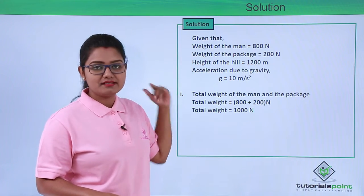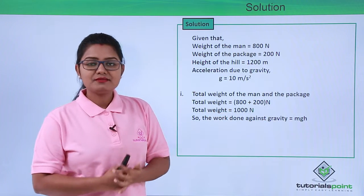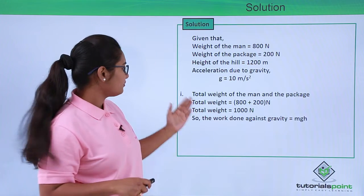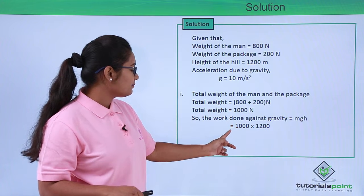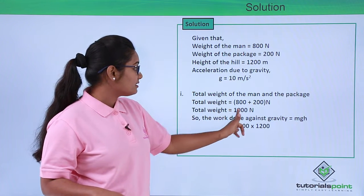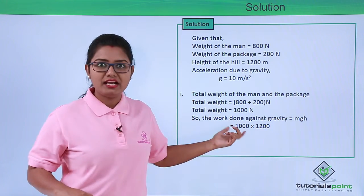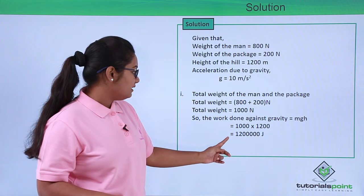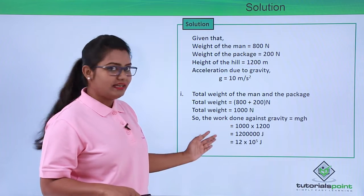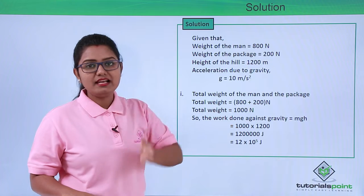This total weight of 1000 Newton has moved from point B to point A, which is at a height of 1200 meters above the ground. The work done against gravity is given by the potential energy formula: W = mgh, where mg is the total weight, which is 1000 Newton. Substituting h as 1200 meters, the work done equals 1000 × 1200, which is 1.2 × 10⁵ joules. This is the total work done by the man against gravity in moving the package with himself to the summit.